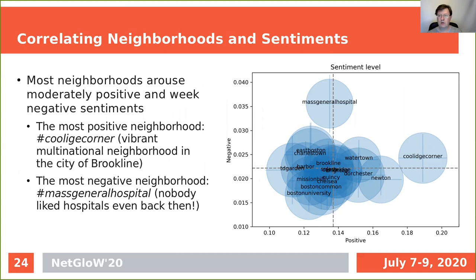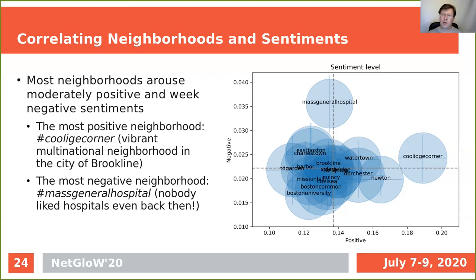The radius of the circles is associated with the standard deviation of the average. Most neighborhoods arouse moderately positive and weak negative sentiments. We see Brookline, which apparently associates with happiness, but we wouldn't know that just from the sentiment level plot alone — if we didn't already know from the previous analysis that Brookline was a happy place, we'd have no reason to believe it. There are two outliers in this chart. The first one is Coolidge Corner, which is part of the city of Brookline, and according to VADER it is a pretty happy place. So perhaps Coolidge Corner is a happy place but the rest of Brookline is not.